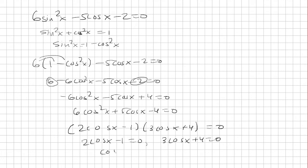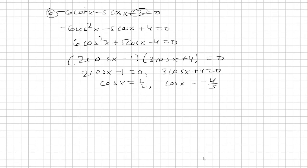We get cosine x equals one half and cosine x equals negative four thirds. Now cosine is between negative 1 and 1, and negative four thirds is outside of that range. So cosine x never equals negative four thirds.